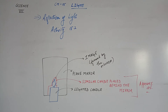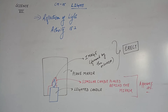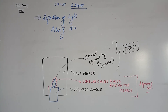Now, if you move the candle from one place to another — whether you keep it on the left side or the right side — the image will also be made in front of the mirror accordingly. It will not be that the candle is on the left and the image is on the right, or the candle is on the right and the image is on the left. The way you keep the candle, the image forms in the same way. The image formed in the mirror is an erect image, and an image formed by a plane mirror is erect and of the same size as the object.